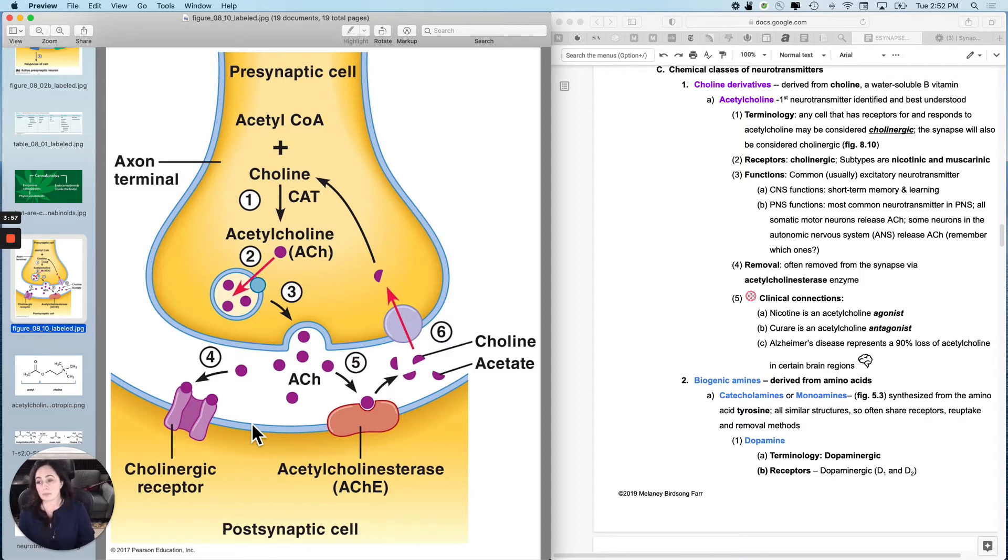Functions of acetylcholine, big picture functionality of acetylcholine. It is usually an excitatory neurotransmitter, meaning that most often it binds to excitatory receptors. And it has both P and S functions that you've already learned. For instance, it's the most common neurotransmitter in the peripheral nervous system. All somatic motor neurons release acetylcholine. That's how that works. And then, of course, in the autonomic nervous system, all of the preganglionic neurons release acetylcholine. And the postganglionic ones, the parasympathetic nervous system neurons release it again. So, you knew that already.